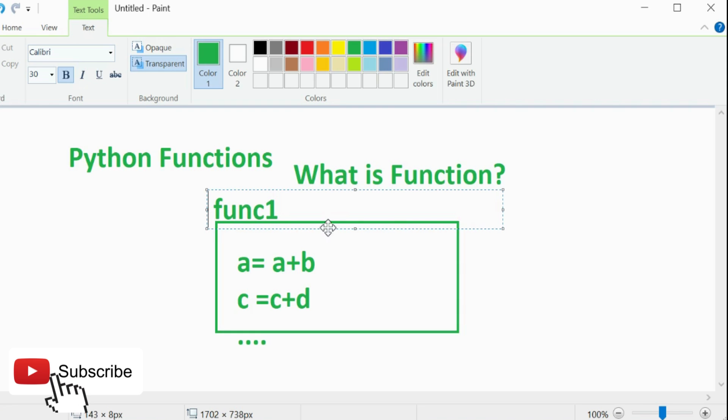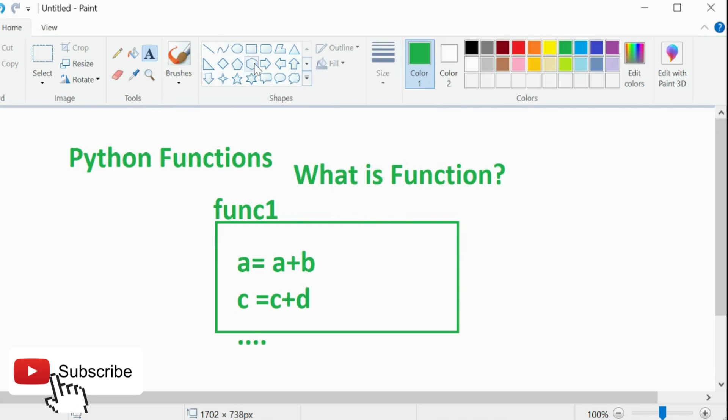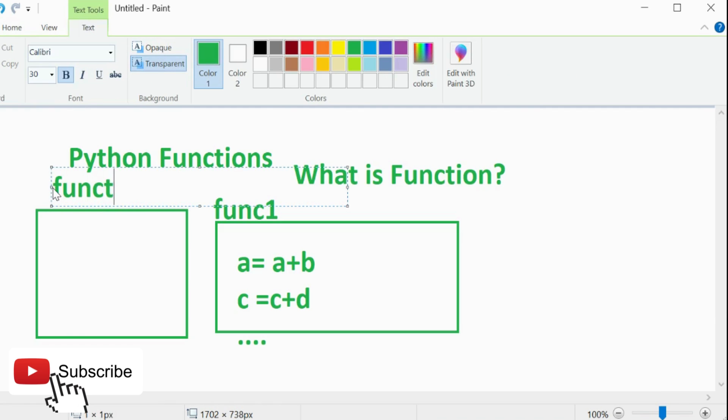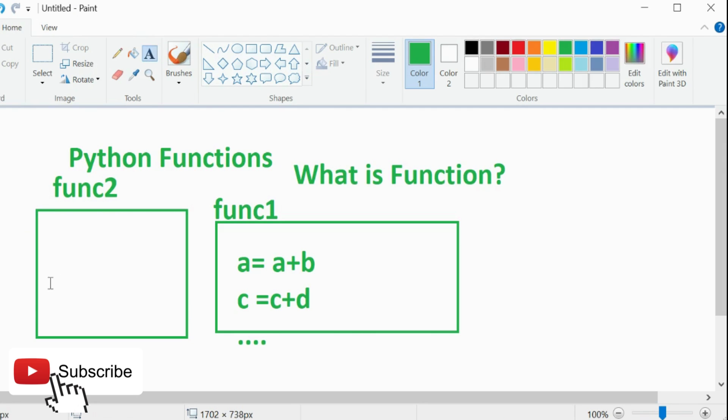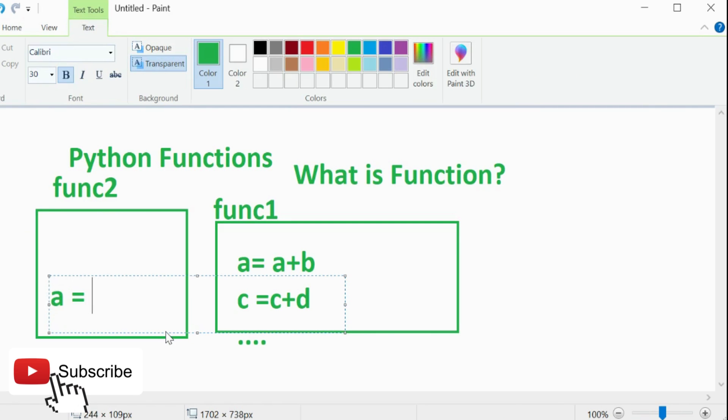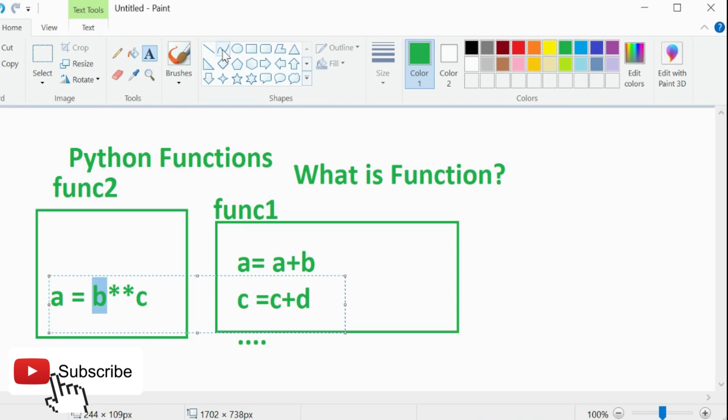If I try to explain you more about it, for example I have this function. Now I take another box and there is another function called function2. Function2 is kind of doing, let's say mathematics, a mathematical operation. Maybe a = b cube, but this b is being provided by this guy. Maybe this b is dependent on function1.